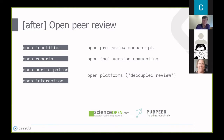Several main traits of OPR can be identified: open identities, meaning both authors and reviewers are aware of each other's identities (a non-blinded process); open reports, meaning review reports are published alongside the main article; open participation, meaning members of the wider community can contribute to the review process; and open interaction, allowing direct discussion between authors and reviewers. These traits can be combined in different ways and complemented by other aspects, such as open peer review menus or open pre-review manuscripts.